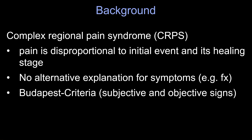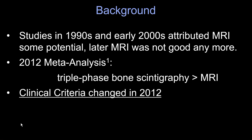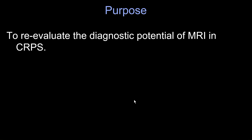The reason imaging is excluded is quite obvious — it probably does not have a lot of helpful information. In the 1990s and early 2000s, some studies attributed MRI and other imaging modalities some value for CRPS diagnosis, and a meta-analysis showed that triple-phase bone scintigraphy was actually better than MRI in 2012. But then the criteria changed, and since then we never really had to look at CRPS on MRI again. So we wanted to re-evaluate the diagnostic potential of MRI in CRPS.